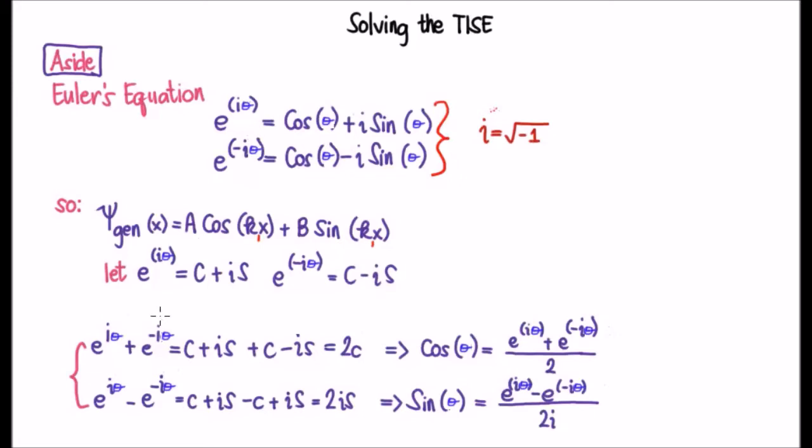The first thing I'm going to do is add e to the i theta and e to the minus i theta. So we're going to have cosine plus i times sine plus cosine minus i times sine. The i times sine components will cancel and we'll be left with twice cosine of theta.